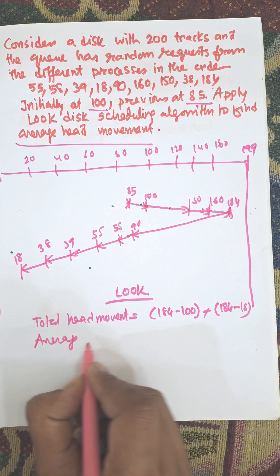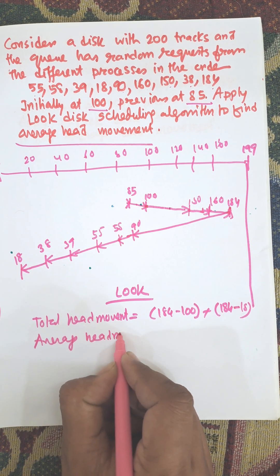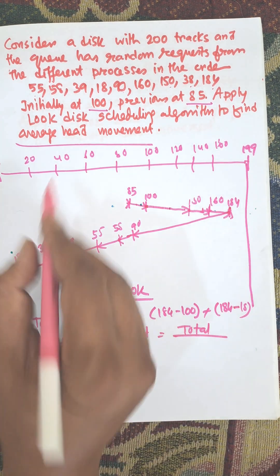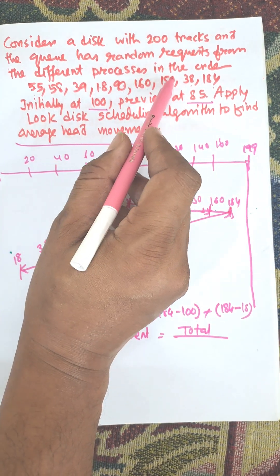Now, average head movement equals total divided by number of requests. Number of requests is 1, 2, 3, 4, 5, 6, 7, 8, 9. Just calculate this and it will be the answer.